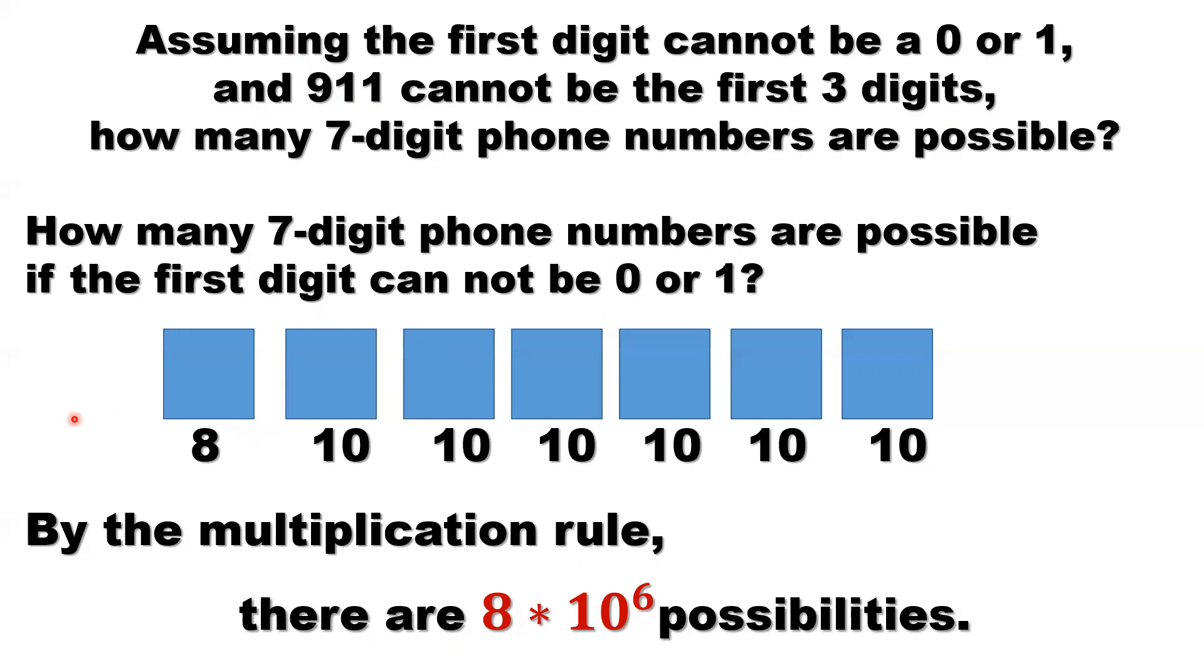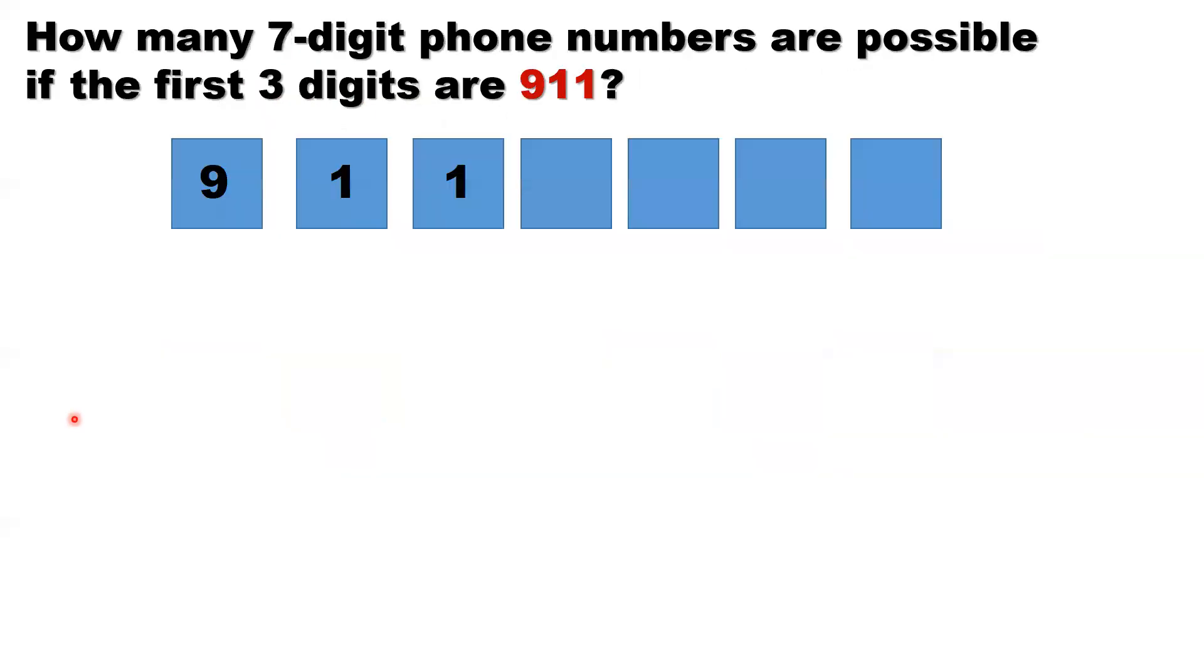Now in the second case, let's calculate how many 7-digit phone numbers are possible if the first 3 digits are 9-1-1. So here is 9-1-1. How many possibilities here? You can only have one possibility. You cannot select others.